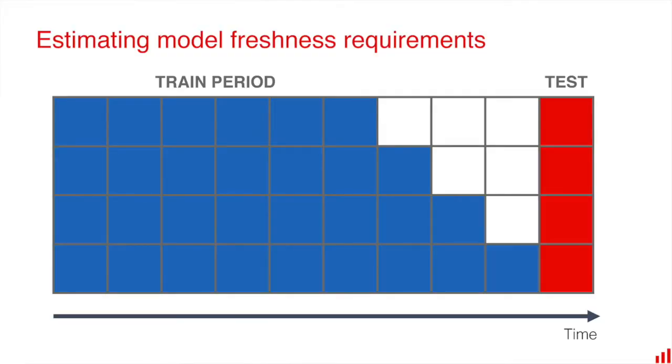We can even estimate it in advance. We can take our historical data, train our model on different periods, and then see how well the model trained on, for example, one month of fresh data or one week of fresh data performs — and this way get a ballpark of how frequently we will need to retrain. But it does not always happen that these changes are gradual.